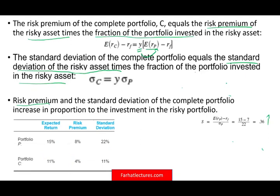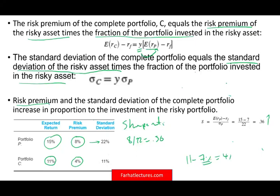Looking at the different portfolios: Portfolio P has an expected return of 15%, risk premium of 8%, standard deviation of 22%, and a Sharpe ratio of 8/22 = 0.36. Portfolio C (50/50 split) has an expected return of 11%, risk premium of 4% (11 minus 7), standard deviation of 11%, and a Sharpe ratio of 4/11 = 0.36 as well. Simply put, the Sharpe ratio remains the same as long as you are on the capital allocation line.